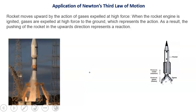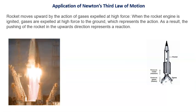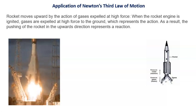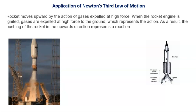The rocket moves vertically upward by the action of gases expelled at high force. When the rocket engine is ignited, gases are expelled at high force to the ground, which represents the action. As a result, the pushing of the rocket in the upward direction represents the reaction force.